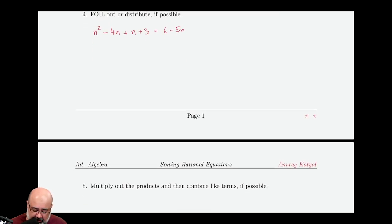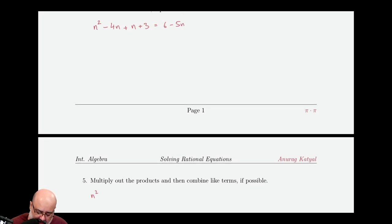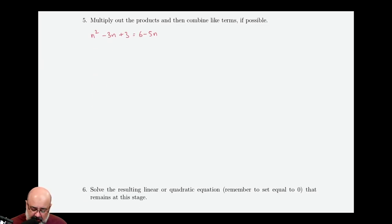The next step is to multiply all the products, which we already have done, and then we combine like terms. So n squared will stay. Negative 4n plus n would give us negative 3n plus 3 equals 6 minus 5n. Now we see what kind of equation we have. Well, we have a quadratic equation because the highest power is 2. How do we solve these? We set them equal to 0. So I can move both of these terms to the left-hand side, which would result in n squared minus 3n plus 3 plus 5n minus 6 equals 0.